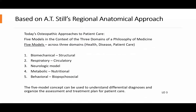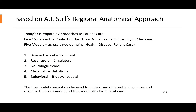This is what we teach today at the school here and in all the colleges of osteopathic medicine. We teach this regional anatomy approach. When we talk about manipulation, we talk about what it will do to the system of the body or the system that you're trying to affect, whether it be biomechanical, structural, respiratory, circulatory, neurologic, metabolic, nutritional, behavioral, biopsychosocial — the five model concept.